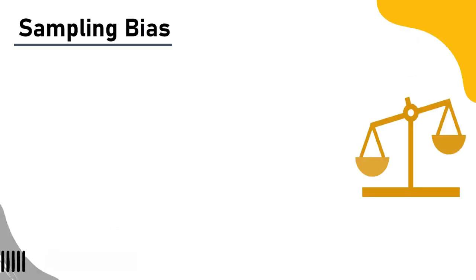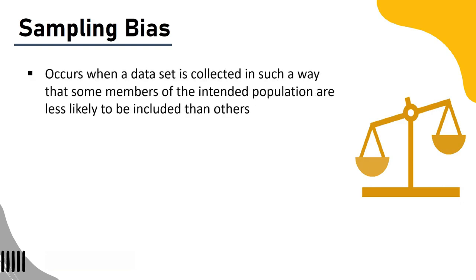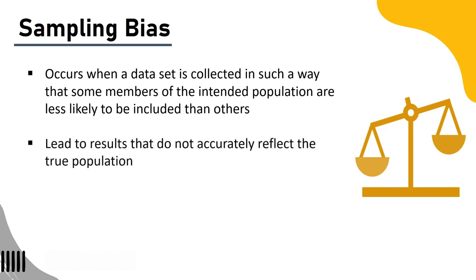Sampling bias. In statistics, sampling bias is a type of bias that occurs when a dataset is collected in such a way that some members of the intended population are less likely to be included than others. This can lead to results that do not accurately reflect the true population. If not accounted for, sampling bias can lead to incorrect conclusions about the population.